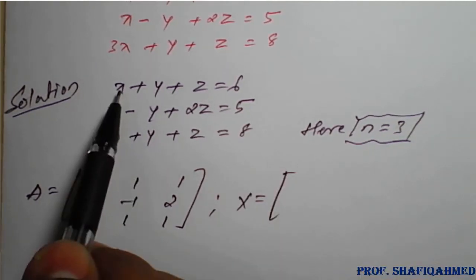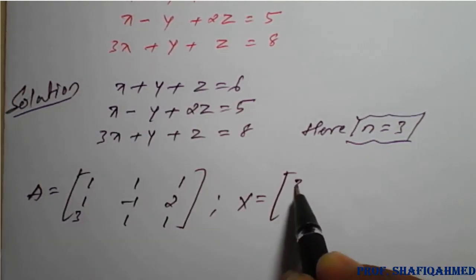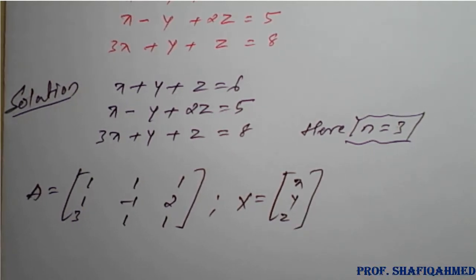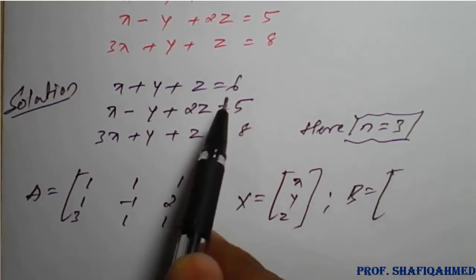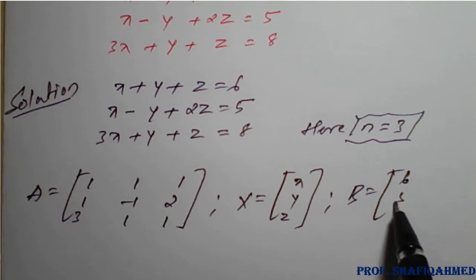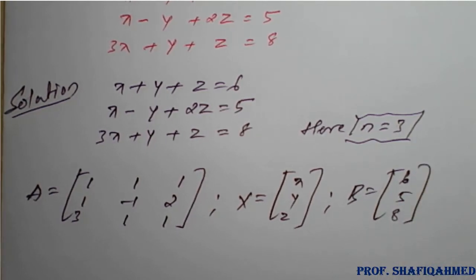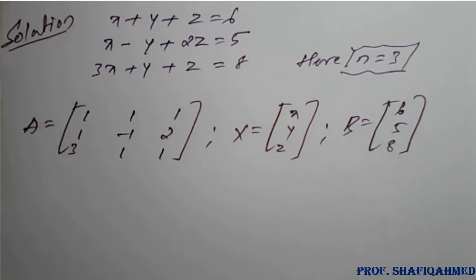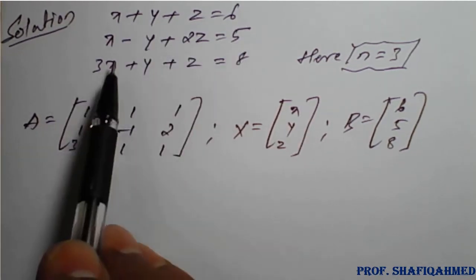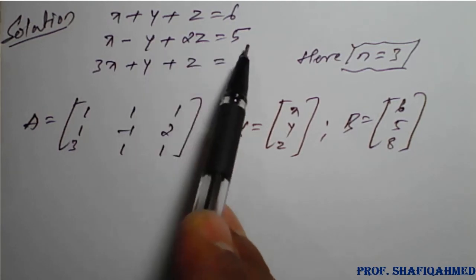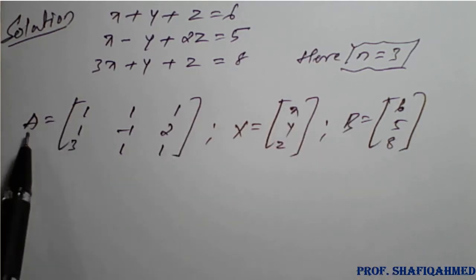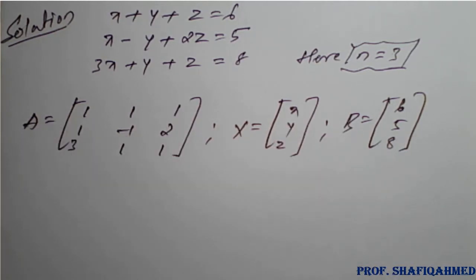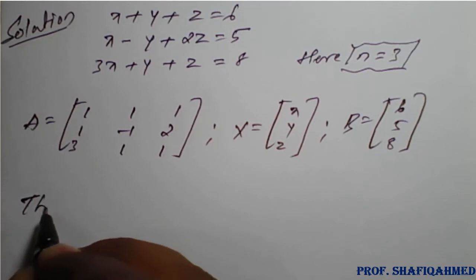Matrix X contains the variables x, y, z. Matrix B contains the constant values 6, 5, 8. So the given system — x plus y plus z equal to 6, x minus y plus 2z equal to 5, and 3x plus y plus z equal to 8 — is expressed as matrices A, X, and B.